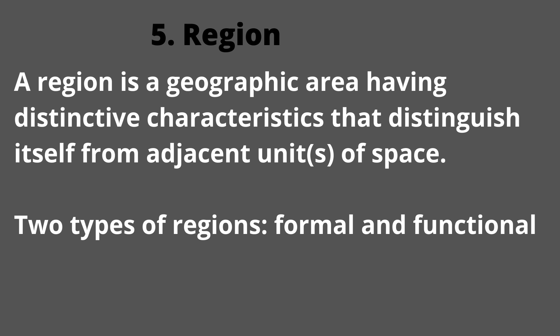Region is a geographic area having distinctive characteristics that distinguishes itself from adjacent units of space. There are two types of region: formal and functional. Formal region is characterized by homogeneity in terms of a certain phenomenon, such as soil, temperature, rainfall, or other cultural elements like language, religion, gender, and ethnicity.